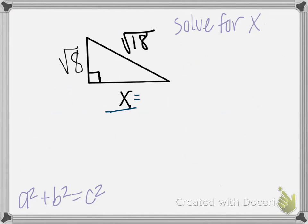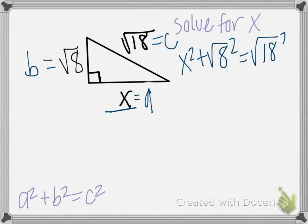Next, we will try solving for a leg instead of the hypotenuse. So let's let X equal A, square root of 8 equal B, and square root of 18 equals C. Plugging this into our equation, we have X squared plus square root of 8 squared is equal to the square root of 18 squared.